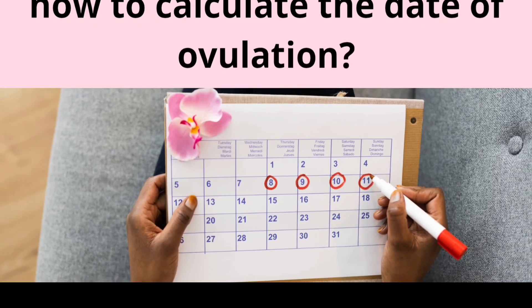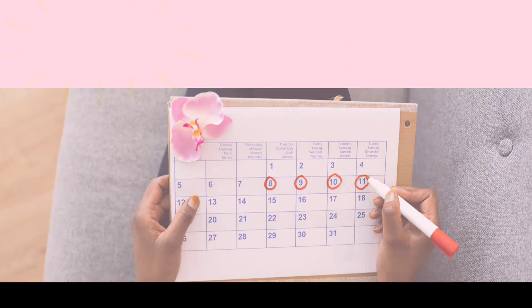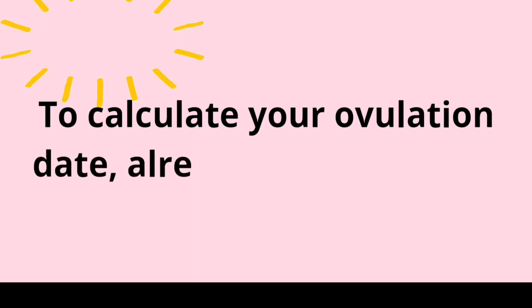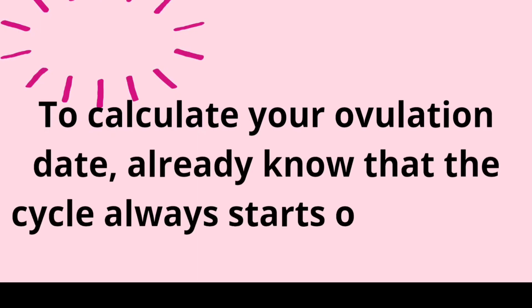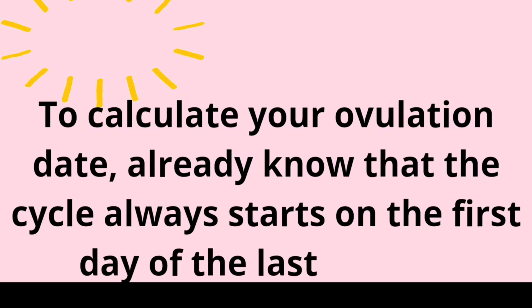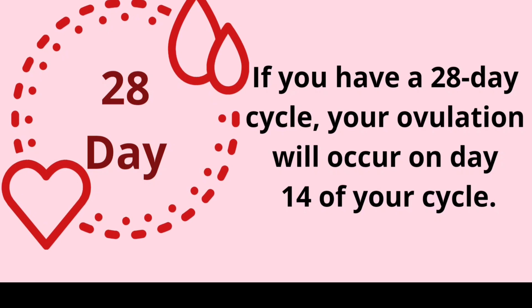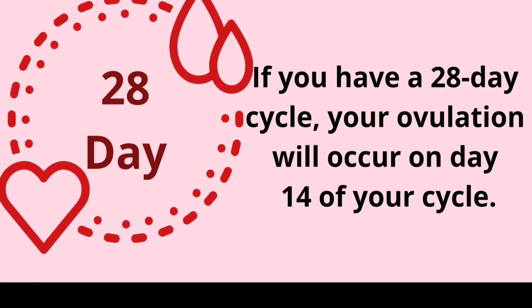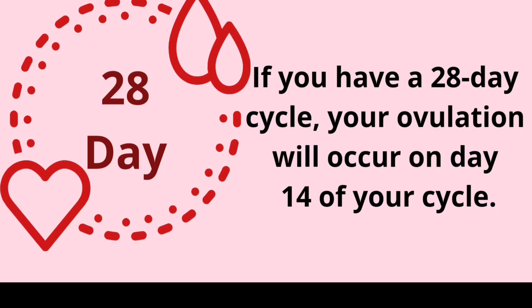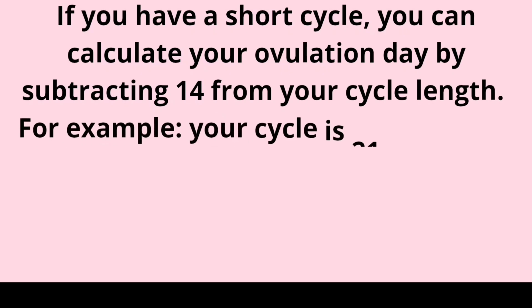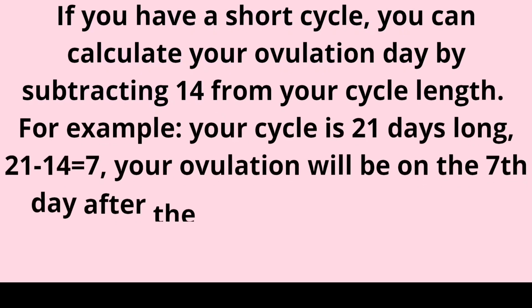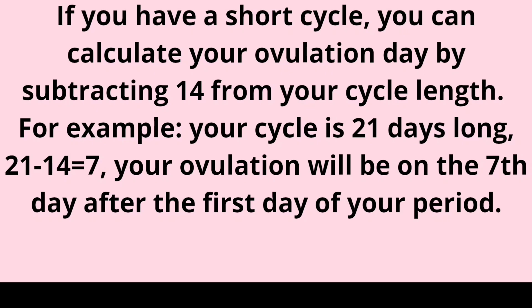How to calculate the date of ovulation: to calculate your ovulation date, know that the cycle always starts on the 1st day of the last period. If you have a 28-day cycle, your ovulation will occur on day 14. If you have a short cycle, calculate your ovulation date by subtracting 14 from your cycle length. For example, if your cycle is 21 days long, 21 minus 14 equals 7 — your ovulation will be on the 7th day after the 1st day of your period.